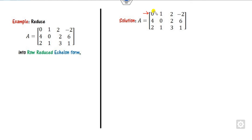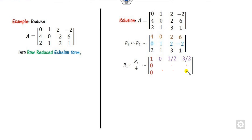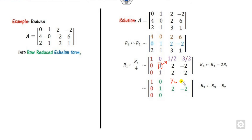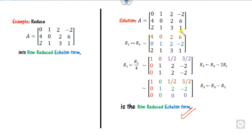For the last example, the first entry cannot directly be made 1, so interchange R2 or R3. After interchanging, divide by 4 to make the leading entry 1. Compute four values: box is 4, previous value is 1; so 4, 6, 1, 2 gives 4 minus 12 divided by 4 = minus 8/4 = minus 2. The next leading entry is already 1. Compute remaining: half, 3/2 minus 0, and minus 2 plus 0 = 0. This is the row reduced echelon form.